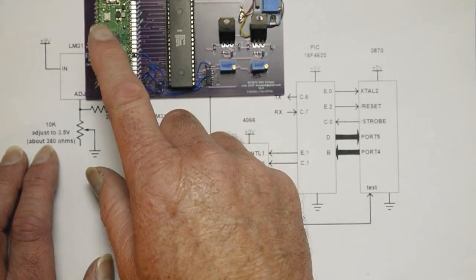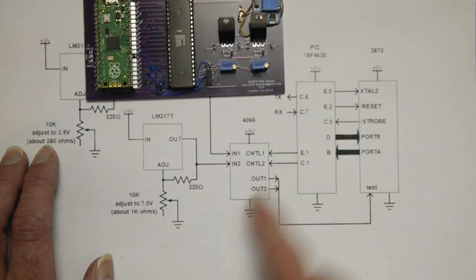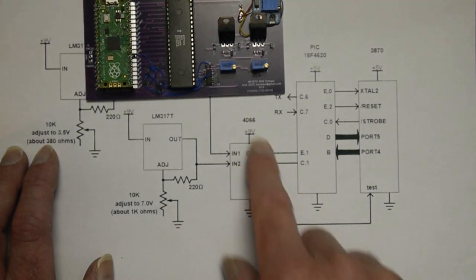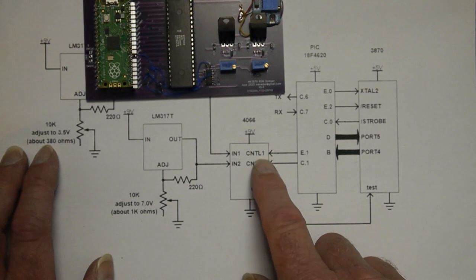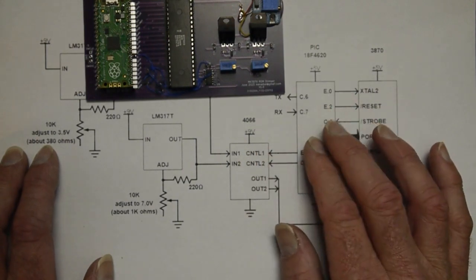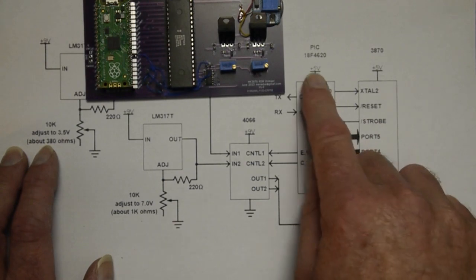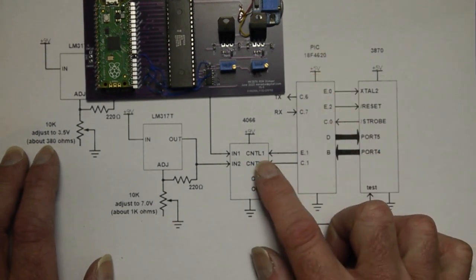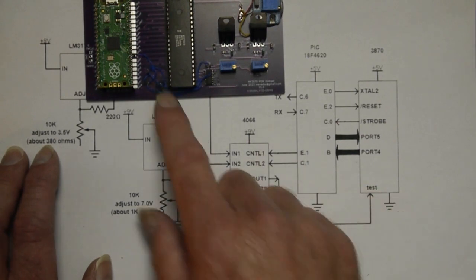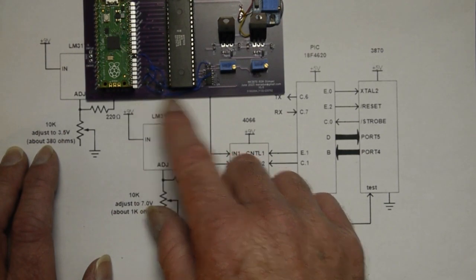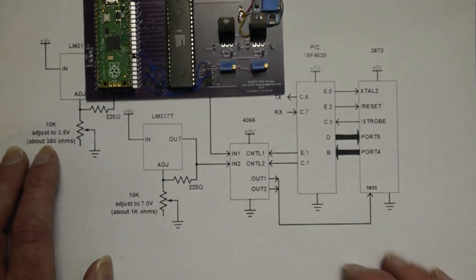You've got the two 317s and their adjustment pots and circuits. Because the Pico runs off 3.3 volts, this chip here requires nine volt-ish signals in order to drive its control inputs and the Pico can't supply that. In fact, the PIC can't supply it either. But the PIC, being a five volt device, gets closer and it can actually handle the control lines. So, what I've actually had to do here is manually wire a couple of transistors in as a level shifter here.